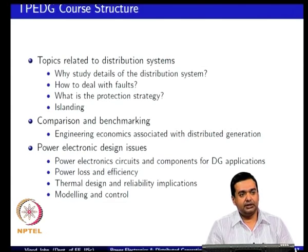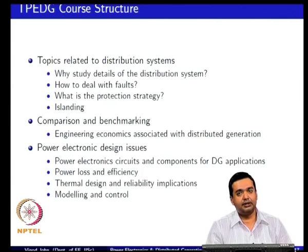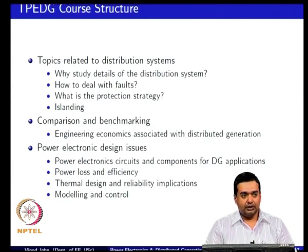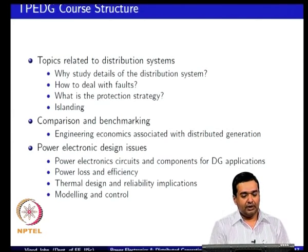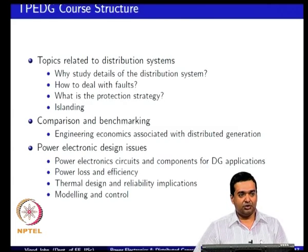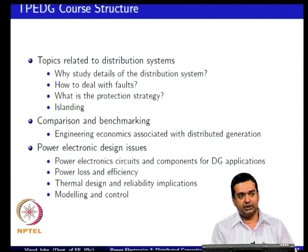What is the strategy to deal with protection, especially when you have faults? One thing that can happen when you have additional sources in the distribution system is that you have the potential to form an island. In the traditional distribution system, the source is essentially the grid coming from the substation to the feeder, with distribution transformers going to residential, commercial, and industrial areas. We need to understand the distribution system related issues.